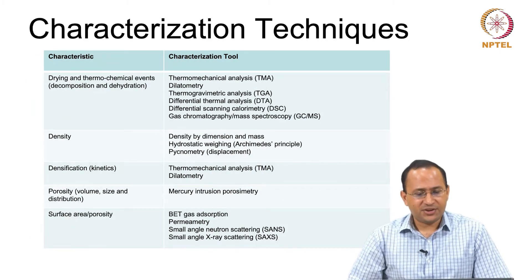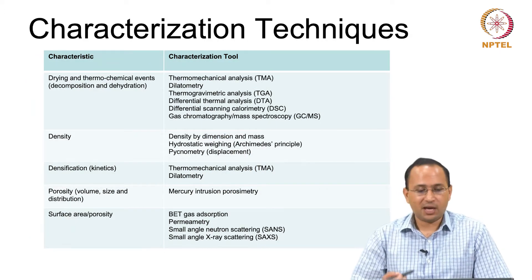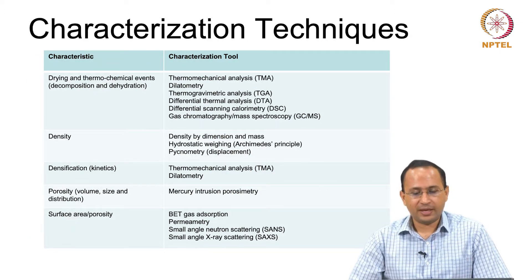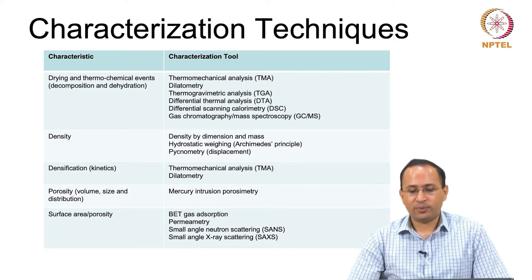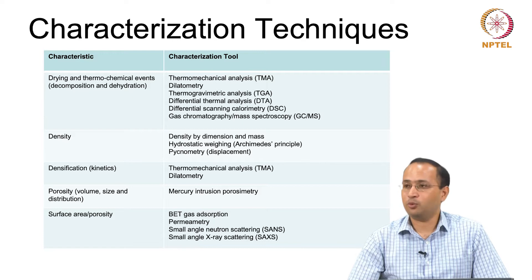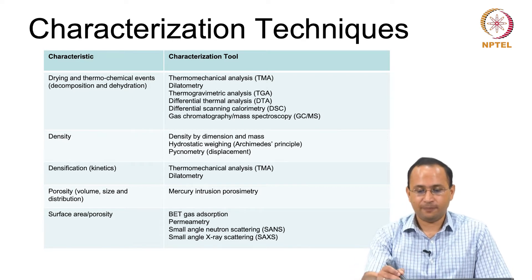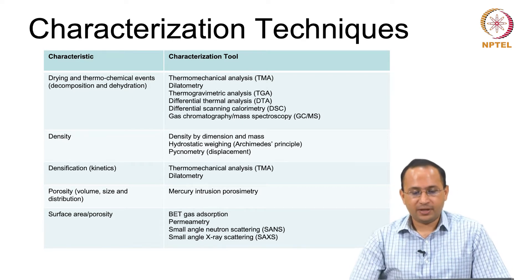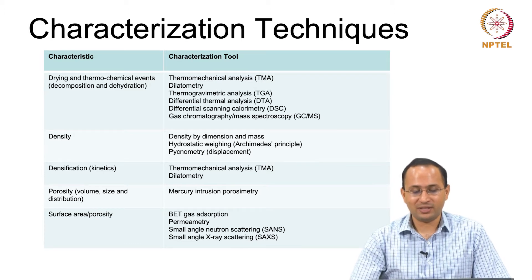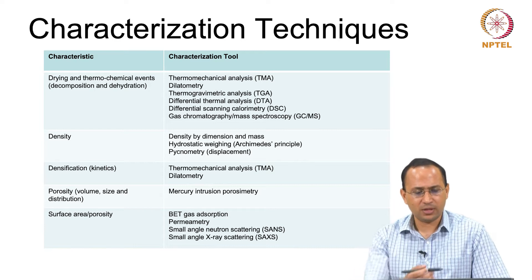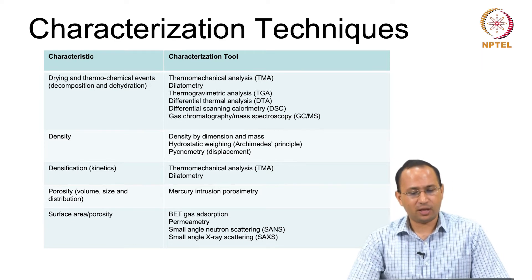If you are looking at drying and thermochemical events like decomposition and dehydration, we can use thermo-mechanical analysis, dilatometry, thermo-gravimetric analysis, differential thermal analysis, differential scanning calorimetry, gas chromatography, and mass spectroscopy. These are the techniques which we can use for drying and thermochemical events.